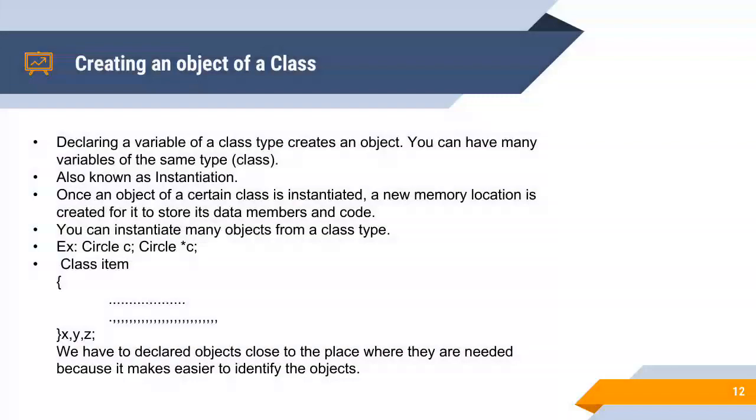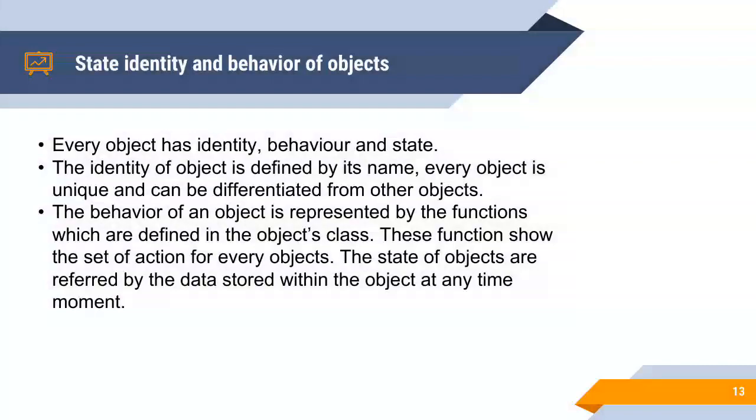Suppose we are defining item class. So you can instantiate X, Y and Z. We have to declare objects close to the place where they are needed because it makes it easier to identify the object.